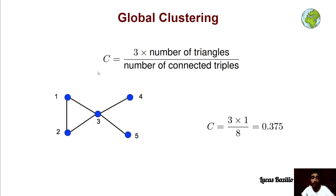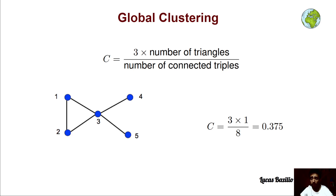Looking at this graph, we see only one triangle: nodes 1, 2, 3. Now, how many connected triples are there? We define a triple as three nodes connected such that there is a path between them — specifically, a node in the middle with two adjacent nodes.